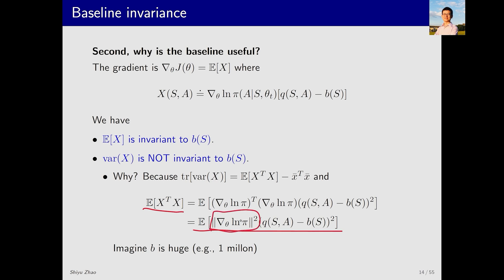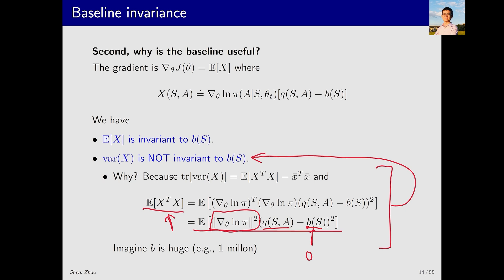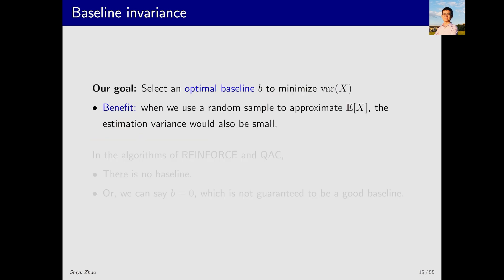We can imagine that if B is equal to 0, or a very large number, say 1 billion, the effect on the variance will be quite different. The key message here is that the baseline does affect the variance. Since the baseline affects the variance, our goal is to select an optimal baseline B to minimize the variance of X. Why do we want to minimize the variance? Because when we perform sampling, we want to reduce the error as much as possible.